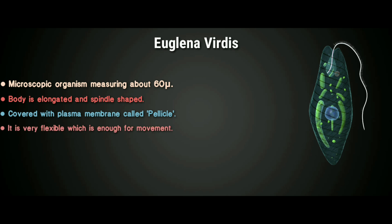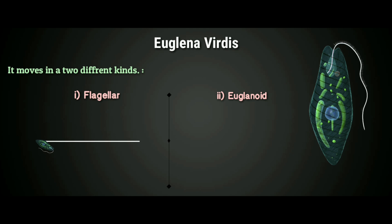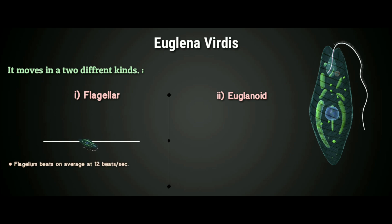The pellicle is very flexible, which allows for movement. Euglena viridis moves in two different ways: flagellar and euglenoid. During flagellar movement, the flagellum is directed obliquely backwards to the stigma. It undergoes spiral undulations with waves that transmit from the base to the tip, causing sideways lashing. The flagellum beats on average at 12 beats per second, driving water backward and inducing the whole body to move forward.